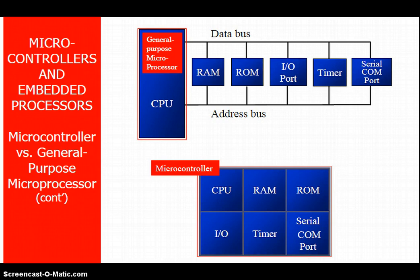Moving to the microcontroller: a microcontroller basically consists of a CPU, RAM, ROM, input/output ports, a timer, and a serial communication port. These are the blocks within the microcontroller, and data bus and address bus connections are also included.